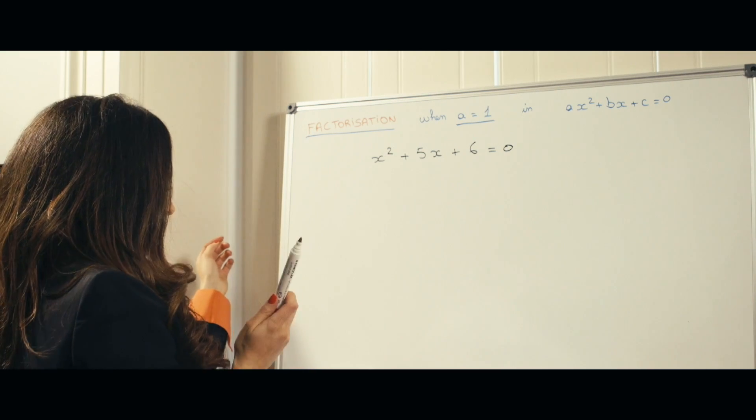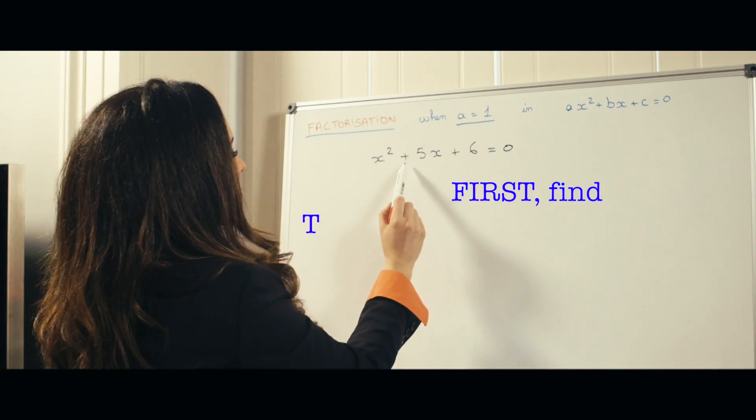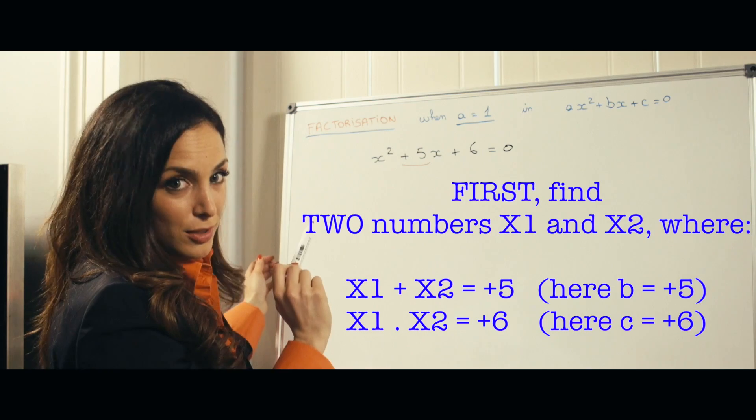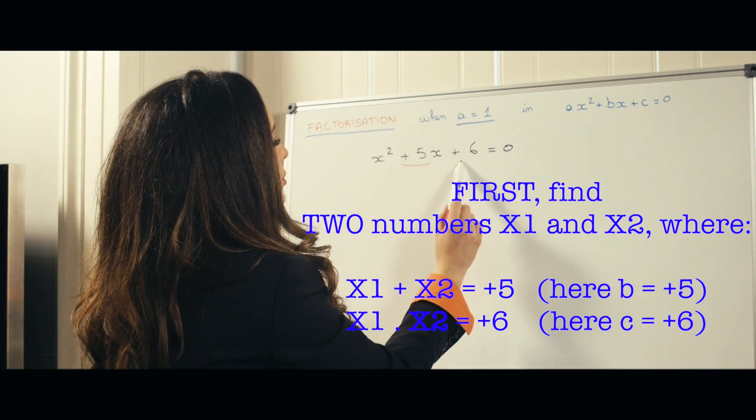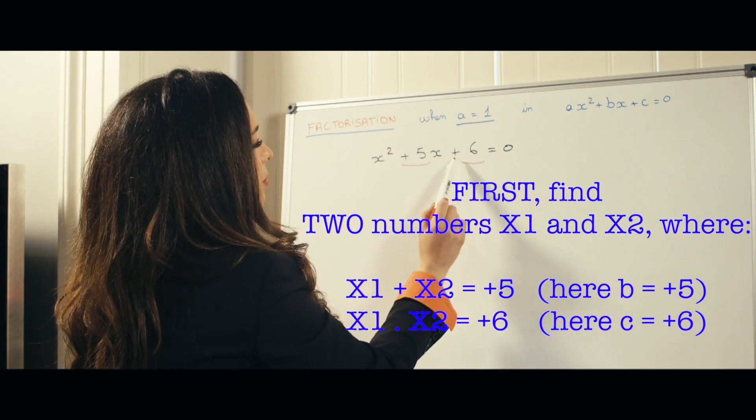We have to find two numbers where the sum is equal to plus 5, but the product is equal to plus 6.